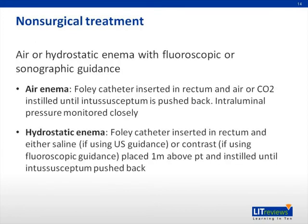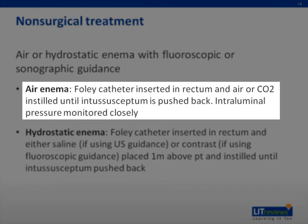There are several non-surgical options for treating intussusception, both involving the use of enemas. Patients should have IV fluid resuscitation and NG tube decompression before reduction via enema is attempted. The first technique is an air enema: patients have a Foley catheter inserted into their rectum, and either air or carbon dioxide is instilled through the catheter to reduce the intussusception via pneumatic pressure, while intraluminal pressure is closely monitored. Carbon dioxide is generally preferred as there is a decreased risk of air embolus compared to air. Reflux of air into the terminal ileum is suggestive of reduction, but reduction can be confirmed via ultrasound.